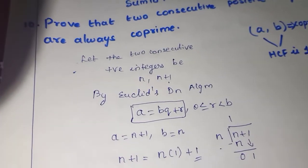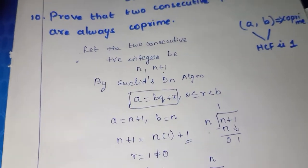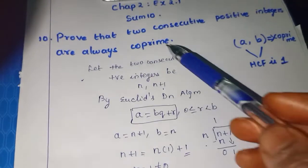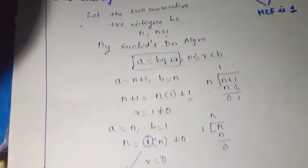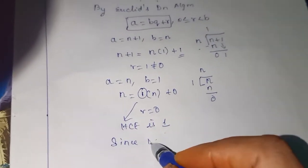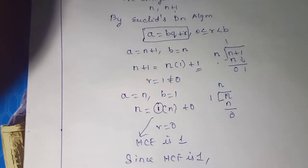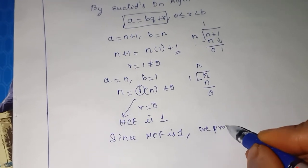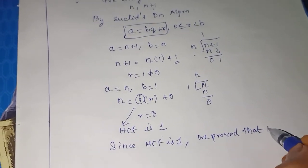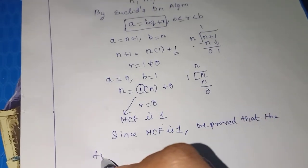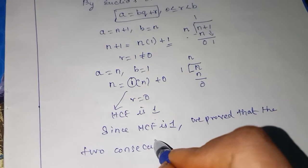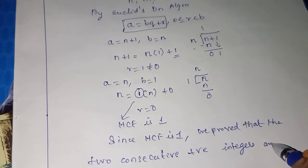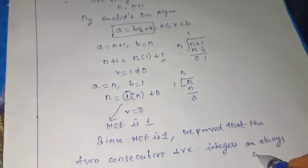We have taken two consecutive positive integers n and n plus 1. Using Euclid's division algorithm, we found that their HCF is 1. Since HCF is 1, we have proved that two consecutive positive integers are always co-prime.